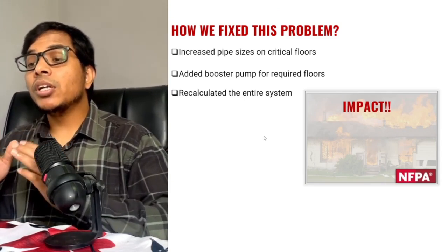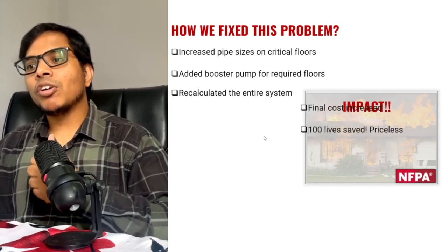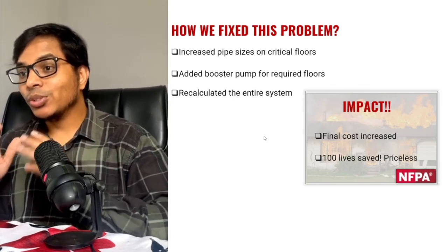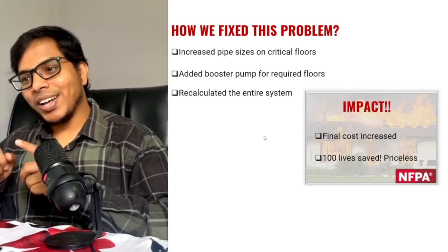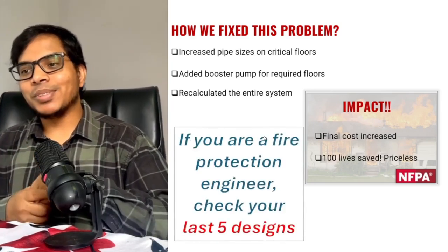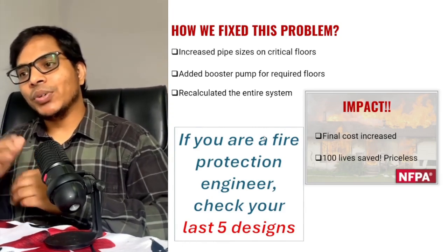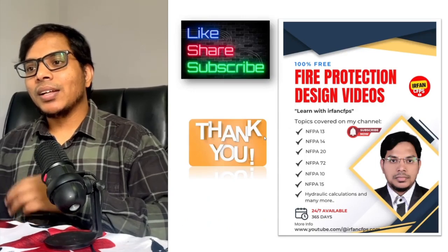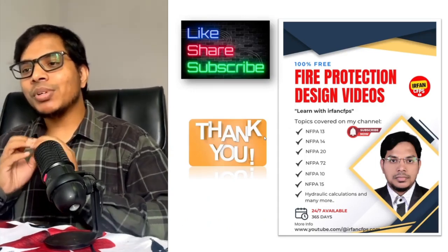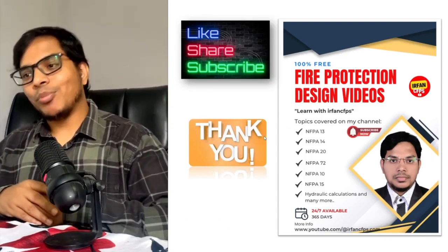Because of this change, there are two implications. Number one, the final cost increased by $200,000 — but 100 lives were saved, and those are priceless. If you are a fire protection engineer, check your last five designs and let me know in the comment section if you faced this kind of problem. Selecting the correct occupancy hazard classification for any building is critical to save life and property.